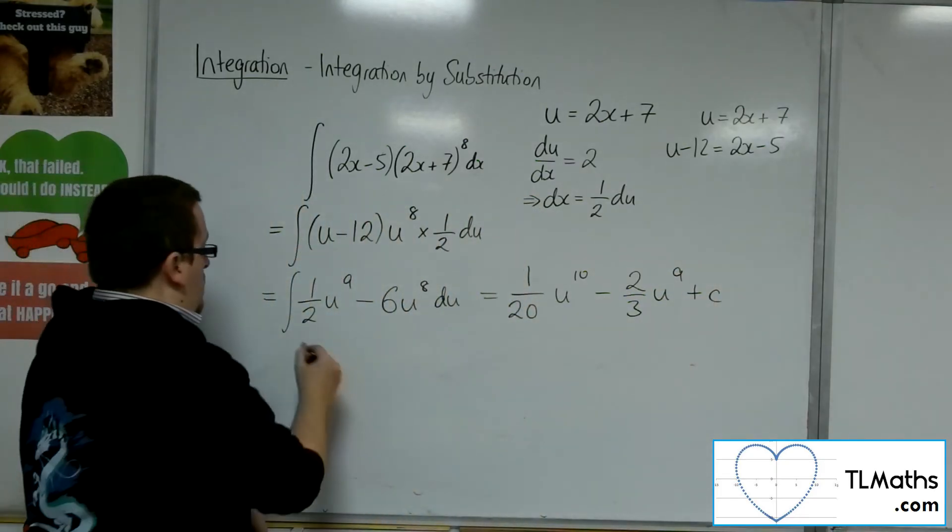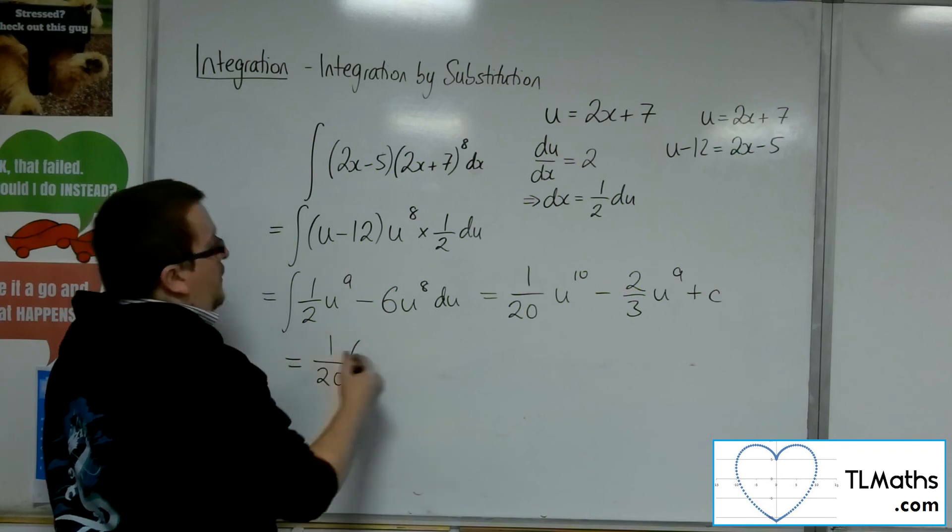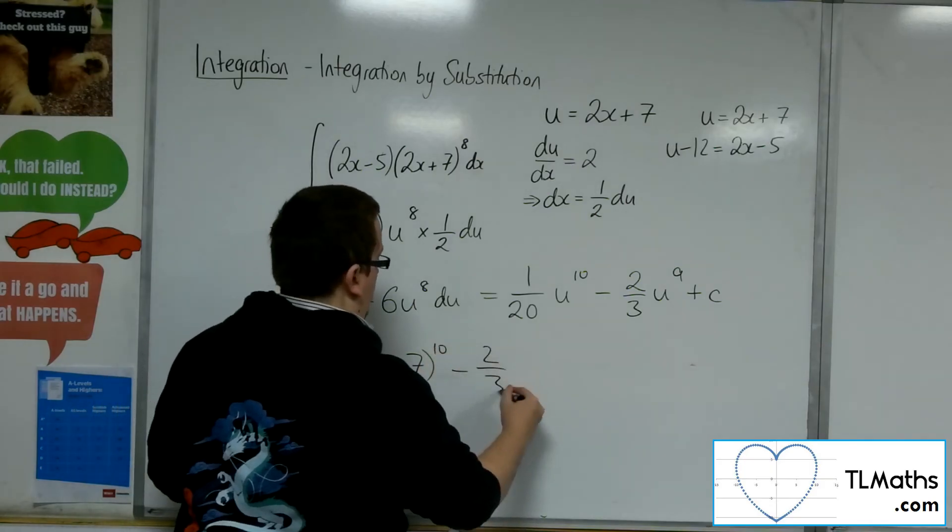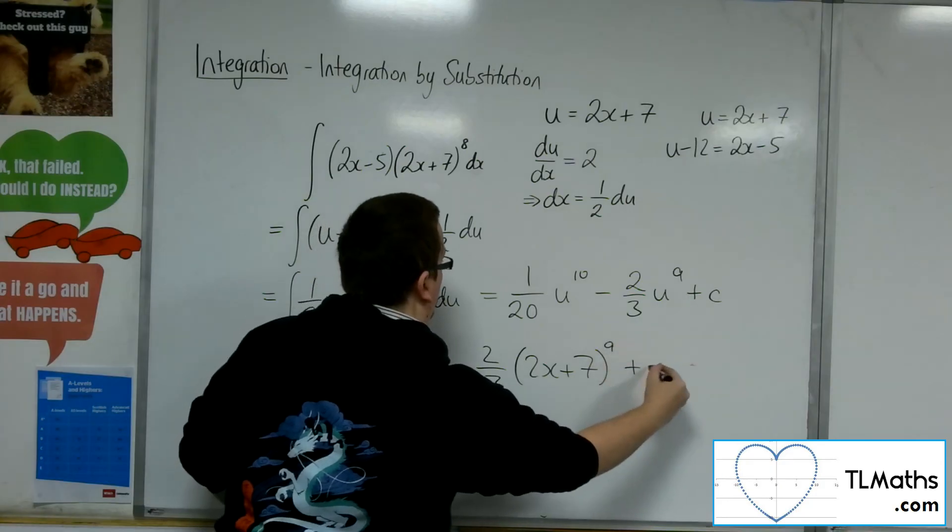And then we substitute u back in. So 1/20 of (2x plus 7) to the 10, minus 2/3 (2x plus 7) to the 9, plus c.